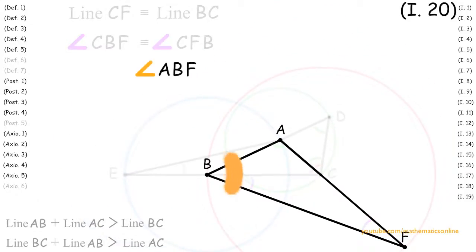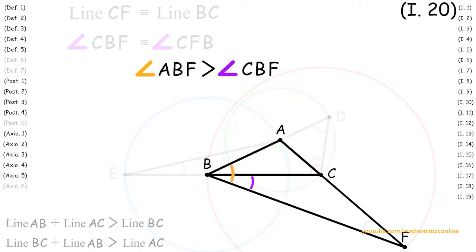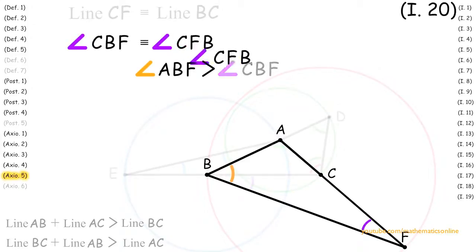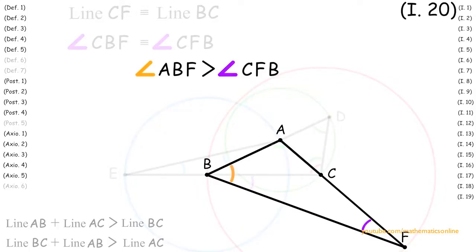Next, looking at angle ABF, by Axiom 5 it is greater than angle CBF. Since we also have that angle CBF is congruent to angle CFB, then angle ABF is also greater than angle CFB. Now since angles ABF and CFB are angles of triangle ABF, then by Proposition 19, line AF is greater than line AB.